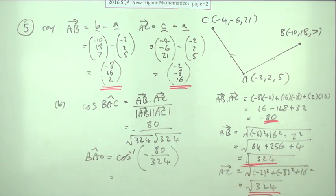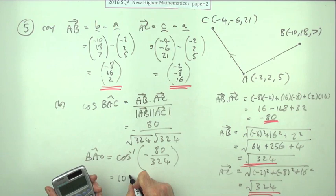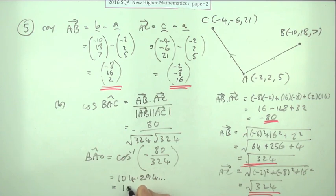And you get 104.294 and so on, which we'll just round off to 104.3 degrees for BAC.